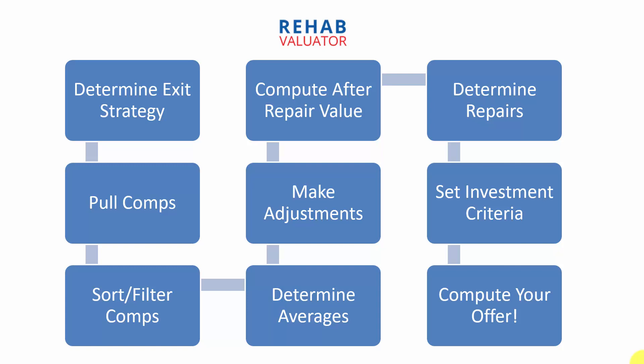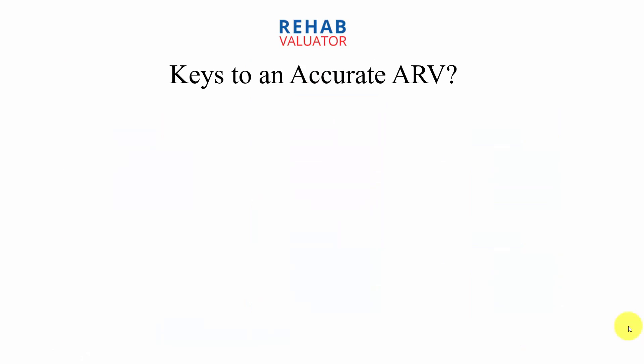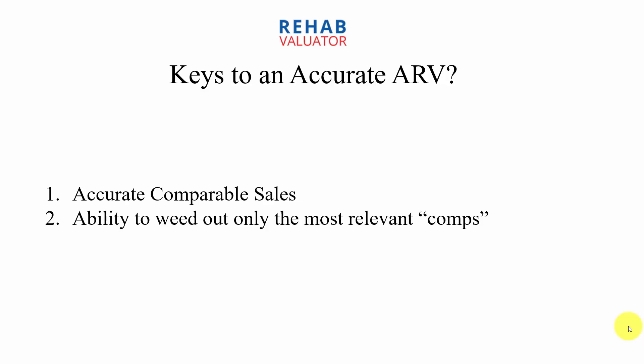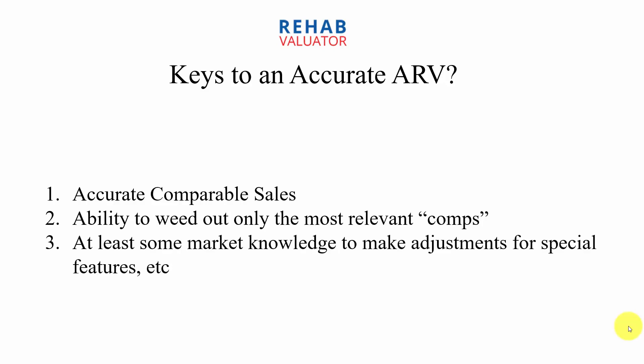Once you know what your property will look like, what condition it's going to be in, the kind of renovations going into it, whether it's going to be a rental or a flip — you're then going to pull comparable sales to match that after repair condition. Then you're going to sort and filter your comps to make sure you're only using the most relevant comparable sales. From there, you determine the averages of those relevant comparable sales. Then you need to make some adjustments — maybe all of your comparable sales have garages but your property will not, so you need to adjust your after repair value down a little bit. After that, you compute your after repair value, determine what your repairs are going to cost, set your investment criteria — whether you're going to use 70%, 75%, 80% of ARV — and then compute your offer.